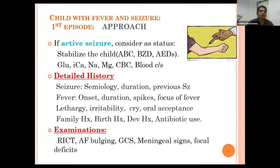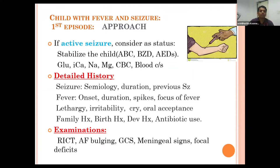If a child presents with active seizure, treat it as status epilepticus: stabilize the child, manage airway, breathing, and circulation, and give rectal benzodiazepine and anti-epileptic drugs. Detailed history is important—seizure semiology, duration, previous seizures, onset, duration and spike of fever, focus of infection, lethargy, irritability, cry, oral acceptance in small children, family history, birth history, developmental history, and antibiotic use.